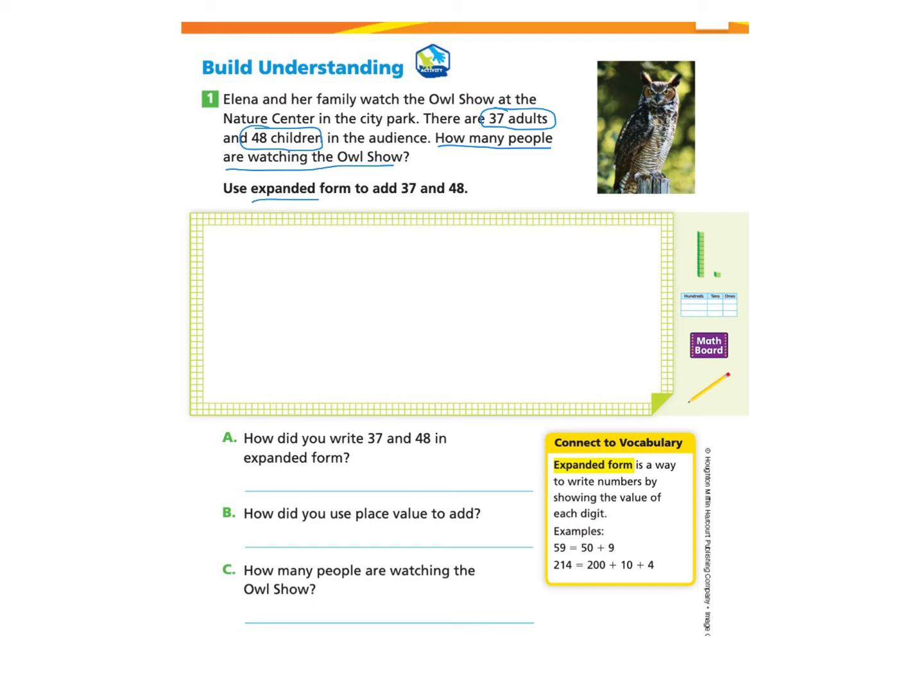And they'd like us to use expanded form to add 37 and 48. So let's take a look at the connective vocabulary to understand expanded form. Expanded form is a way to write numbers by showing the value of each digit, and they give some examples here.